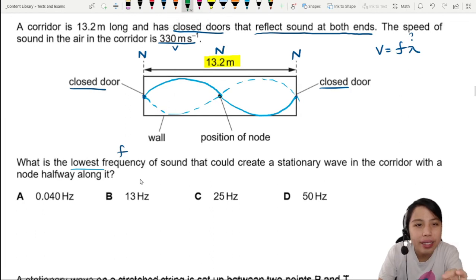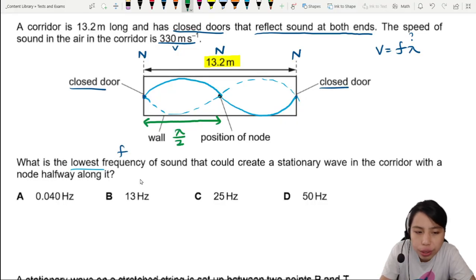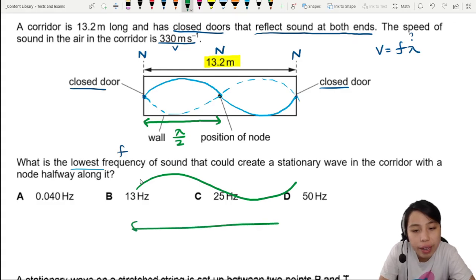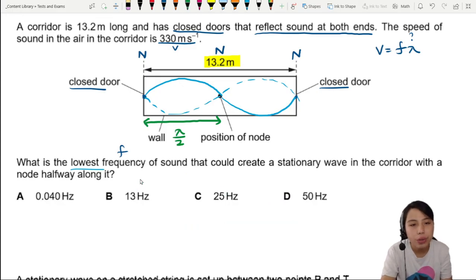You need to recognize that whenever you see one of these loops, that's actually half a wavelength. Because just now we drew one whole pattern like this—that's a full wavelength. So half of that is half a wavelength. This is what we call a loop.